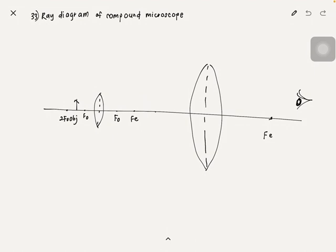Now let's look at the ray diagram of the compound microscope. The object is placed between the focal point and two times the focal point. First, draw a line passing through the optical center. Then draw a line parallel to the principal axis — this line will converge to the focal point. So the second line is here.